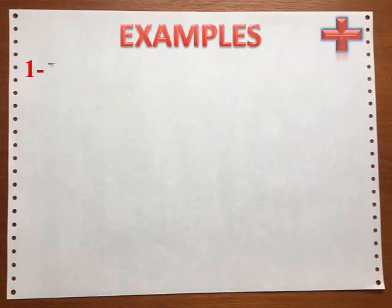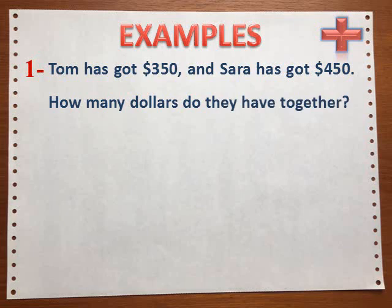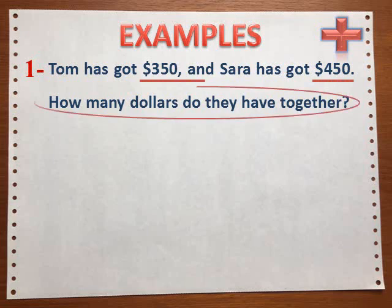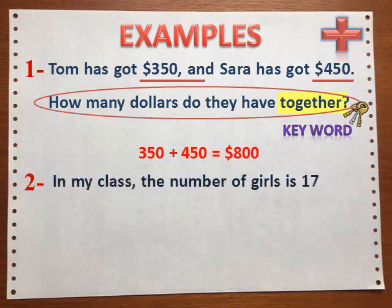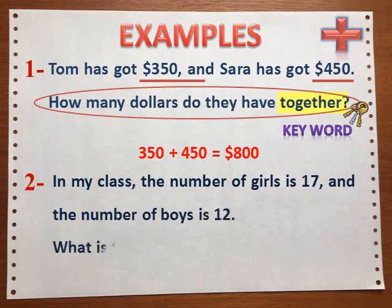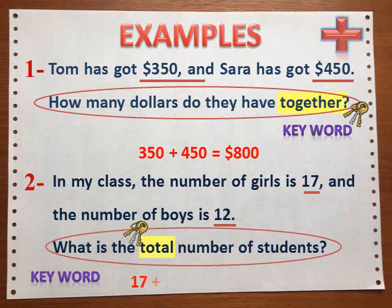Examples: Tom has got 350 dollars and Sarah has got 450 dollars — how many dollars do they have together? Here we have the keyword 'together', so we are going to use the addition operation. In my class the number of girls is 17 and the number of boys is 12 — what is the total number of students? Here we have the keyword 'total', so we are going to use the addition operation.